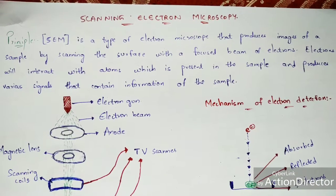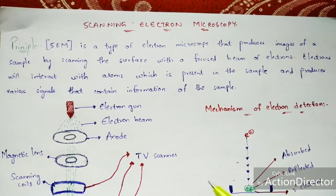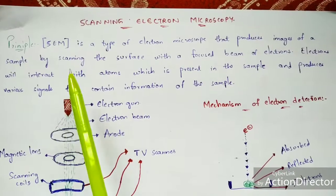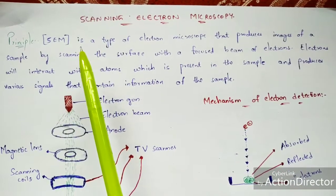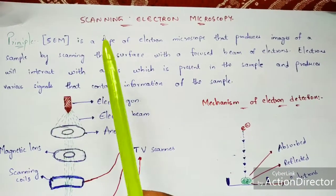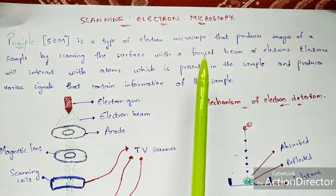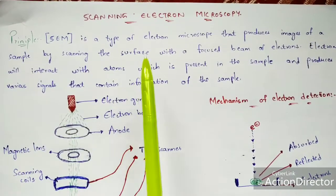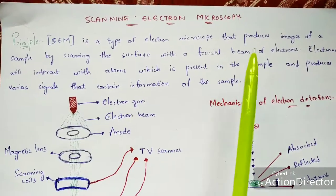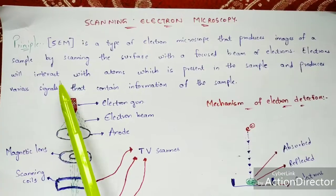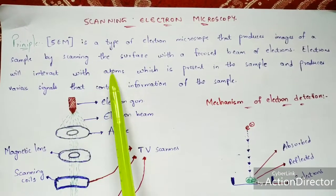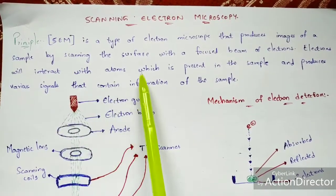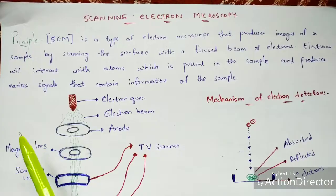In this video, let us discuss about scanning electron microscopy. Coming to the principle, it is shortly abbreviated as SEM and it is a type of electron microscope that produces images of a sample by scanning the surface with a focused beam of electrons. Electrons will interact with atoms present in the sample and produce various signals that contain information about the sample.